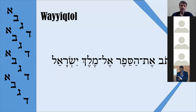A student observes that when the aleph is released with a qamets in vaektov, this is a qamets atop — compensation for the absent dagesh forte. The professor confirms: since aleph cannot be doubled, the patah is lengthened to qamets as compensation. Vaektov means 'and I wrote.'